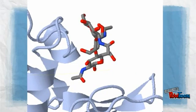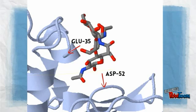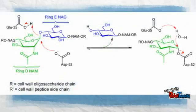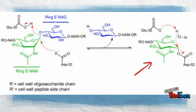Here is a close-up view of the enzyme's active site. Two amino acids play a very vital role here in breaking the glycosidic bond: glutamate-35 and aspartate-52. Together, they interact with NAM and NAG residues to hydrolyze the glycosidic bond. What we are looking at now is a mechanism that describes how these two amino acids work. Glutamate acts as an electrophile and donates a proton to the glycosidic bond. This allows aspartate to act as a nucleophile, and it attacks the carbon-1 of NAM, breaking the bond and producing a glycosyl enzyme intermediate.